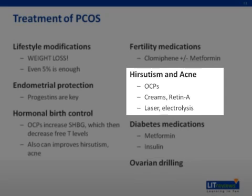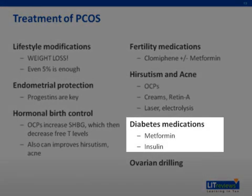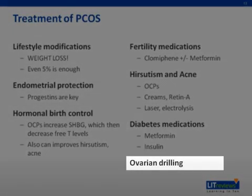Diabetes is often a comorbid diagnosis with PCOS, and if you treat it like you treat non-PCOS patients, that usually works out pretty well. Because insulin resistance is part of the PCOS pathophysiology, metformin is usually first-line since it increases insulin sensitivity. Insulin regimens are added if oral medications are not sufficiently effective. Lastly, an interesting treatment is ovarian drilling, where laparoscopy is used to poke holes in the ovary with electrocautery instruments. It's not completely understood why this works, but it was noted that women who had wedge resections of the ovary oftentimes started having normal cycles, so ovarian drilling is just a less morbid and technically easier version of wedge resection.